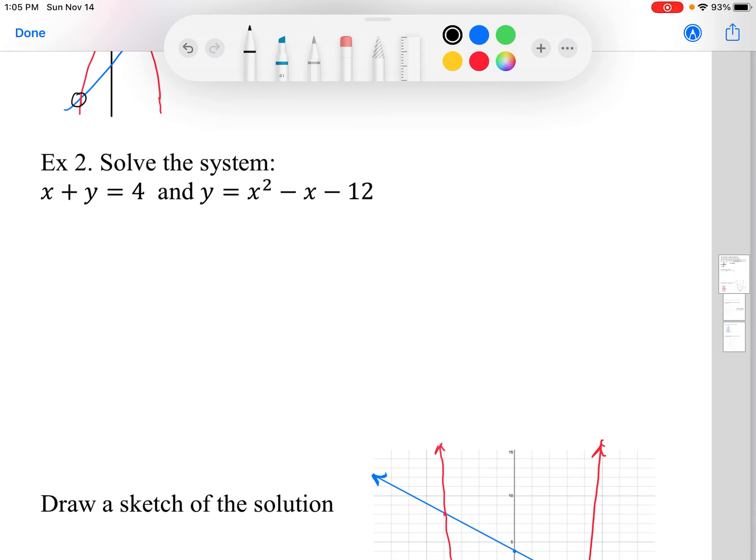For number two we're looking at a system of equations. So we need to solve for both x and y. What we're going to do here is first solve for y: y equals 4 minus x. I'm going to call that equation 1. We're going to call that equation 2. So equation 1 is the linear equation, equation 2 is the quadratic equation.